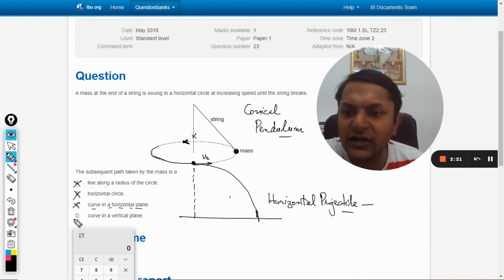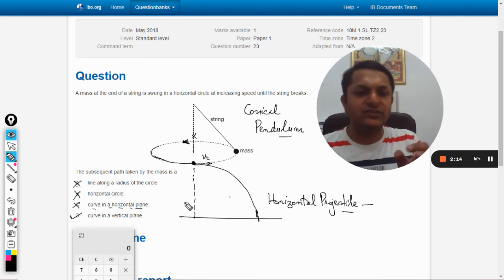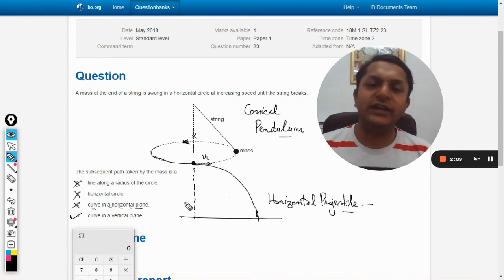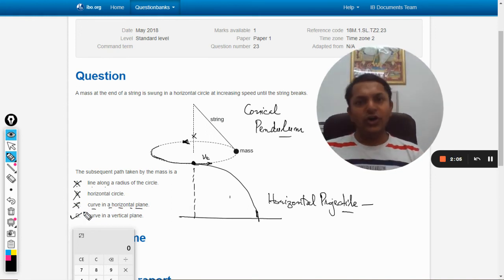Curve in a vertical plane—absolutely correct, because this is going to be a vertical plane. Now the body is going to reduce its height, so it is definitely a vertical plane. So the answer is C. So with this, all the best.